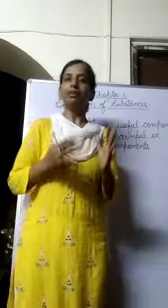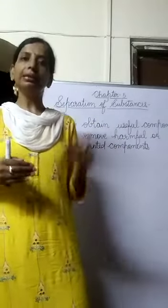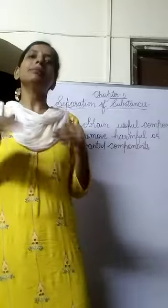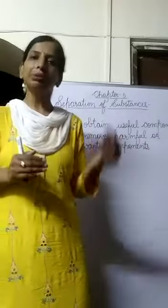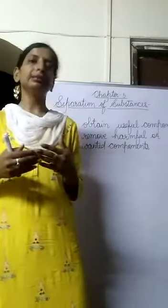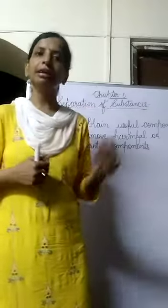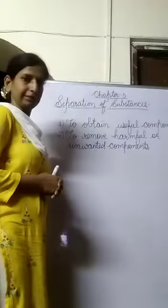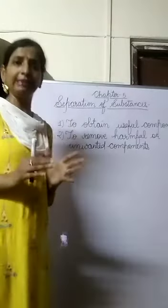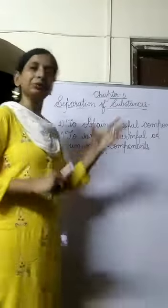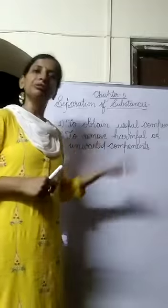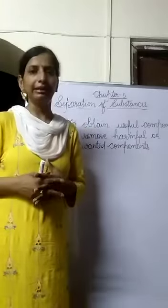The second reason is to remove harmful or unwanted components. For example, before cooking rice or pulses, if there are pebbles, some other grains, or husk present, we remove them. Before cooking rice or pulses, we wash them to remove the dirt. So why do we separate substances? To remove harmful or unwanted components. These are the two main reasons behind separation of substances: to get useful components and to remove harmful or unwanted components.